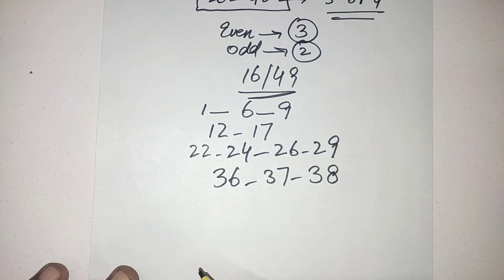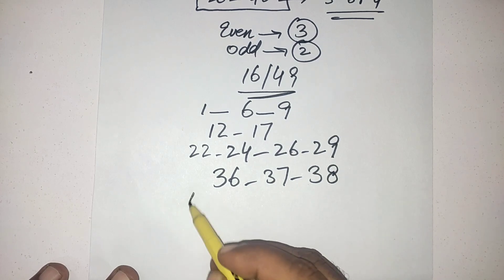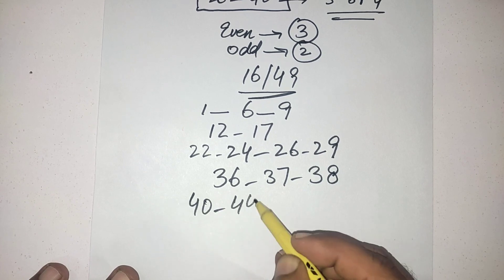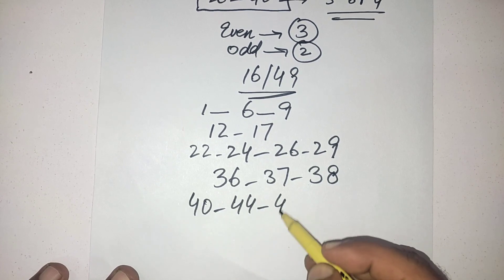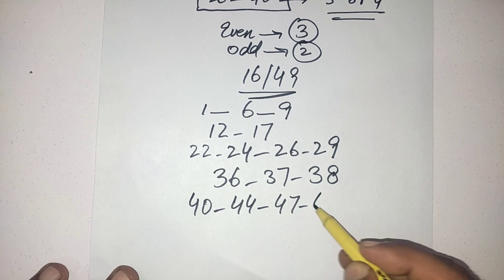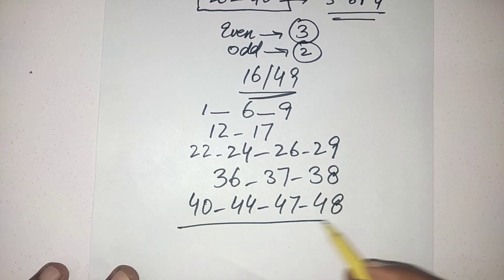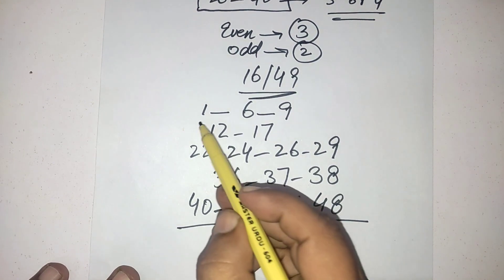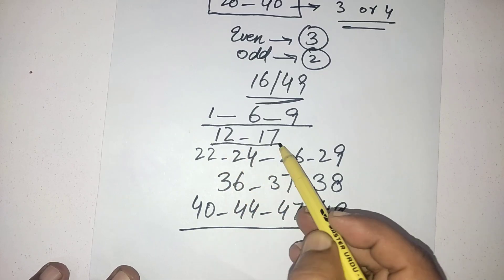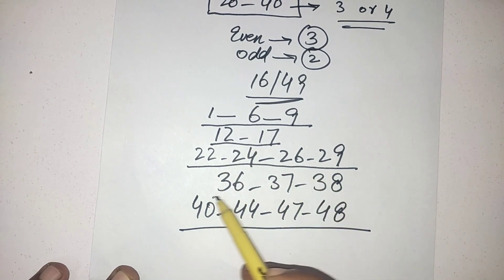From 40 to 49 I have three numbers: 44, 47, and last one is 48. Friends, these are my 16 powerful numbers. If you like any number from it you can choose, if you don't like you can leave it.